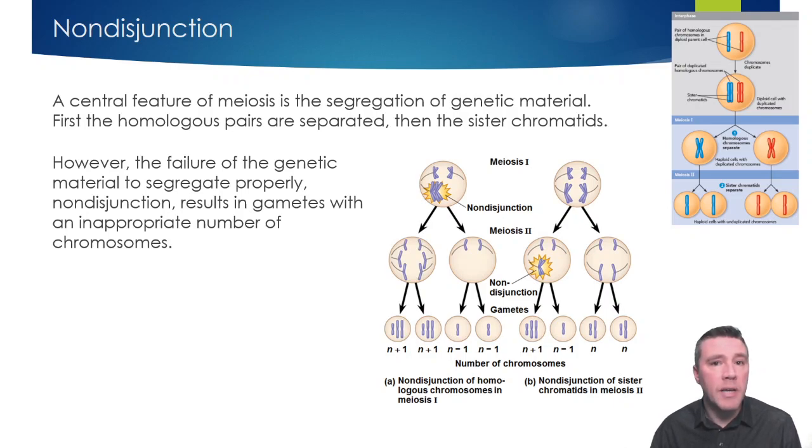If a gamete with an improper number of chromosomes is used in the formation of a zygote, the survivability of the zygote is entirely dependent on which chromosome is missing, or which one is extra. In a moment, we'll take a look at a couple of examples of disorders that result from improper chromosome number.